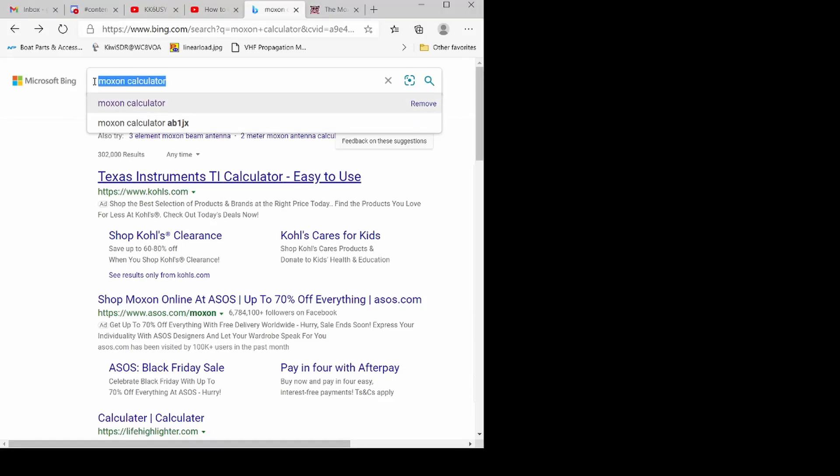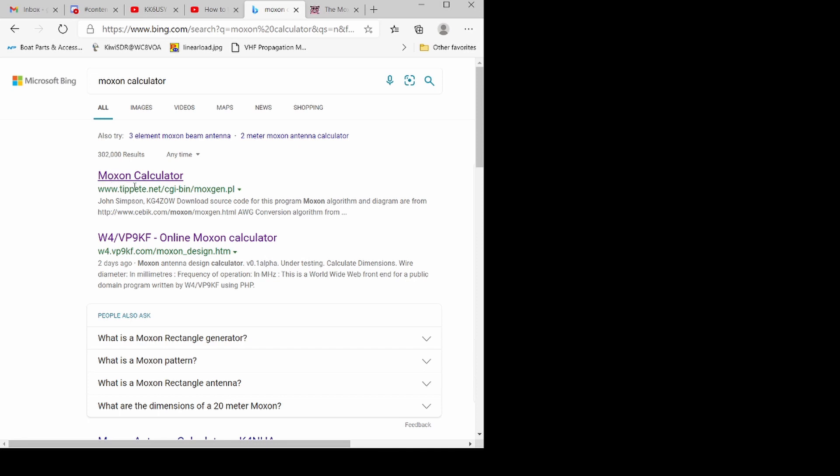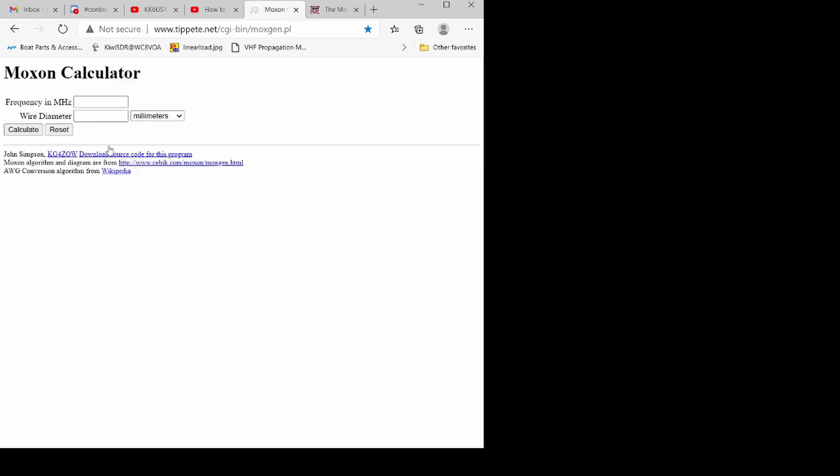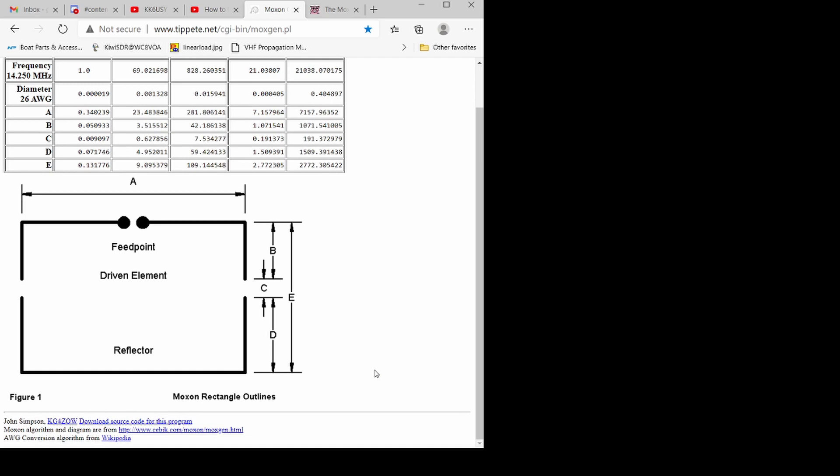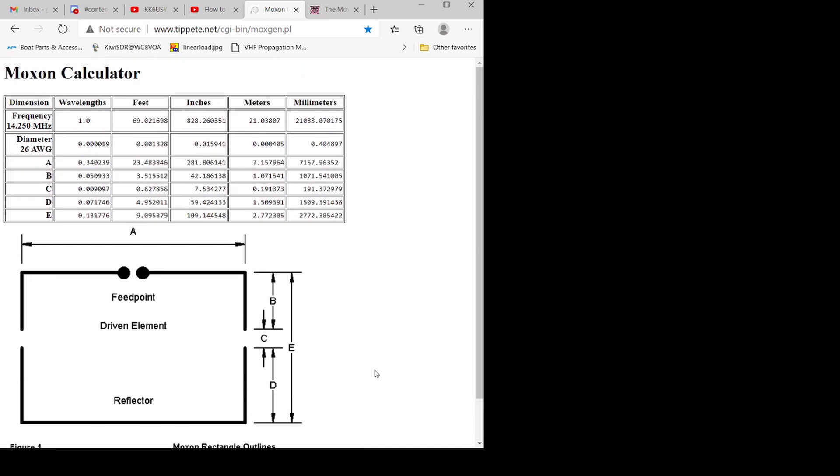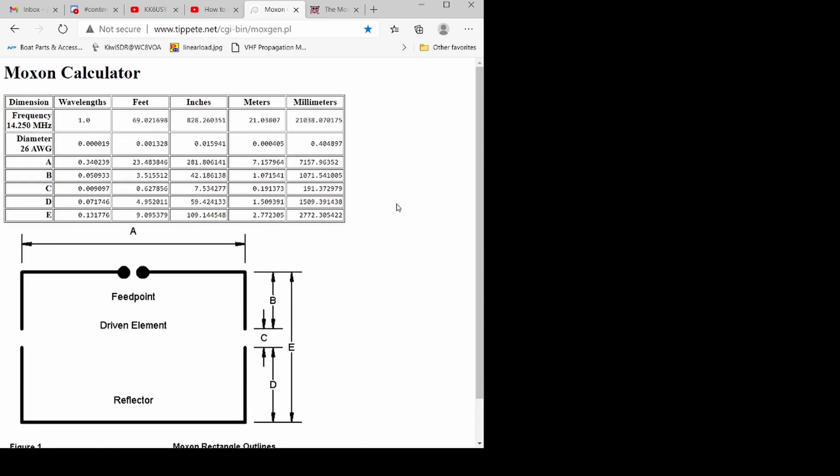What you want to do is go in here and put in Moxon calculator, hit enter. This Tippet one comes up, click on that. I did 14.250, power diameter was 26, measured in AWG. You hit the calculate button and it brings up all your measurements for everything on your Moxon antenna for that frequency.